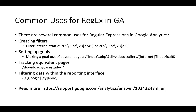There are several common uses for regular expressions in Google Analytics. You can use regex to create filters — it is very common to filter internal traffic and focus on external traffic. For example, a regex can match a range of IP addresses from 205.172.232 to 205.172.235. You can also use regex to set up goals. Using a single regex, you can make a goal out of several pages.